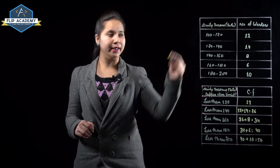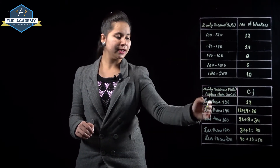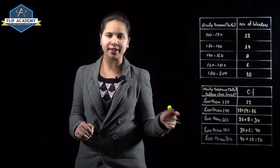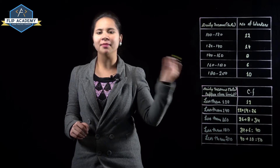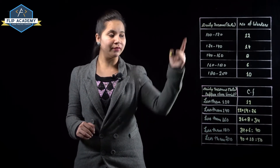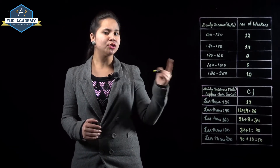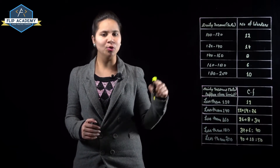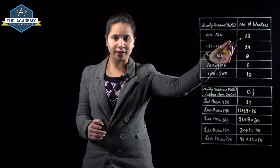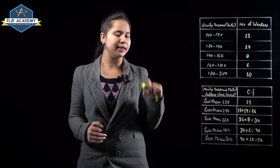To convert to less than type, we write the upper class limits as: less than 120, less than 140, less than 160. Upper class limits ko 'less than' laga dete hain. The given frequencies are converted to cumulative frequency by continuously adding consecutive frequencies.